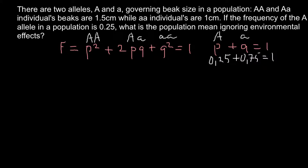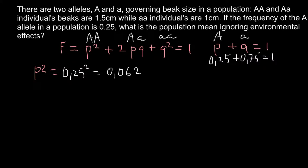Now we know the frequency of both alleles and can find the frequencies of the different genotypes. First, we can find the frequency of the homozygous dominant genotype, which is p². We square 0.25, and the frequency of the homozygous dominant genotype equals 0.0625.